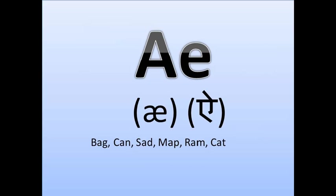The next sound is the /æ/ sound — the short A sound. In Hindi we have an equivalent. The sound is produced from the back of the mouth, stretched a little more. Example words are: back, set, map, can, ram, and cat. The phonetic symbol and Hindi pronunciation are shown alongside. For words where this sound occurs, you need to stretch it slightly from the back.